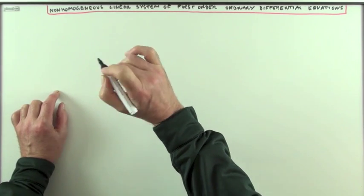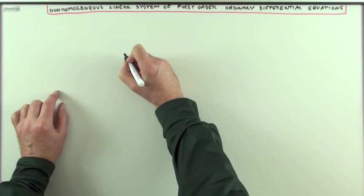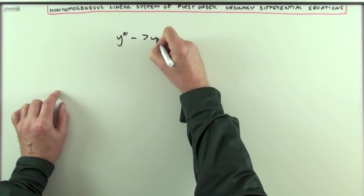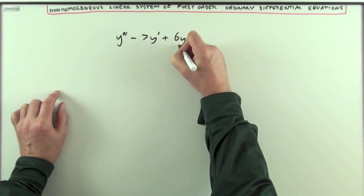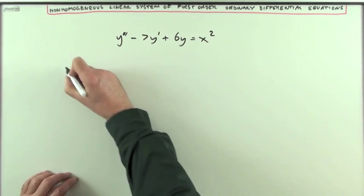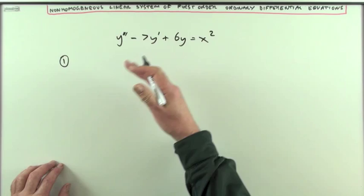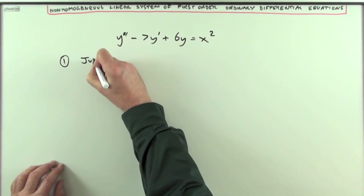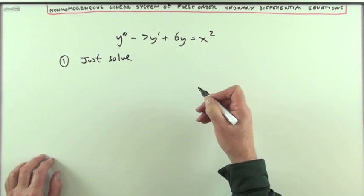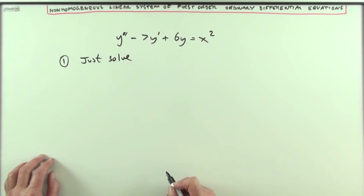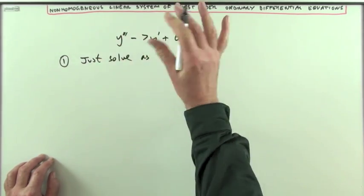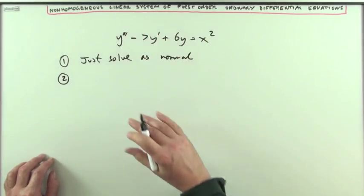So the plan is this: I'm going to take this third order linear differential equation, y triple dashed minus 7y dashed plus 6y equals x squared. First, I'll solve it the usual way—just solve by using the particular integral and the complementary function, just solve as normal. That'll be the first video, so you can skip that if you like.